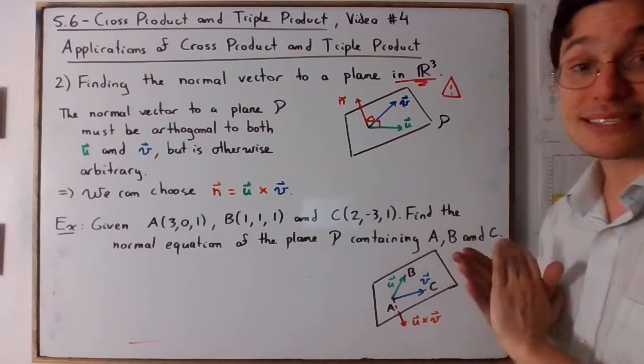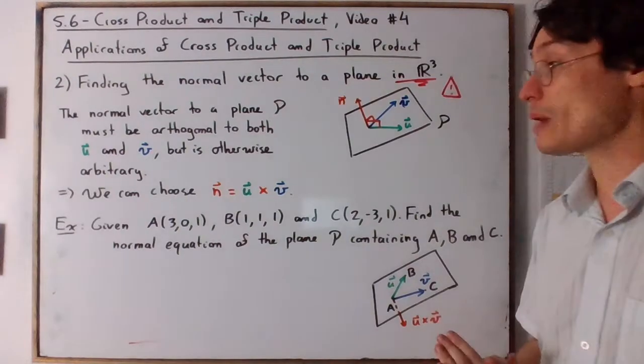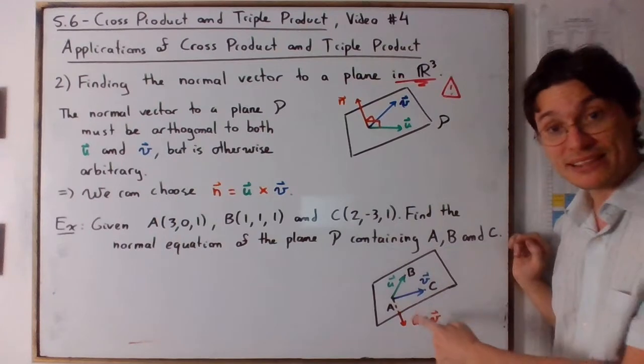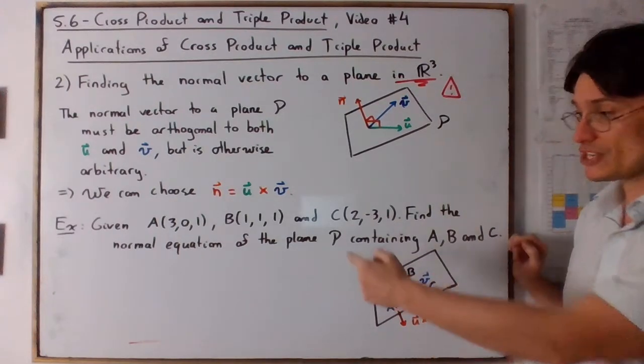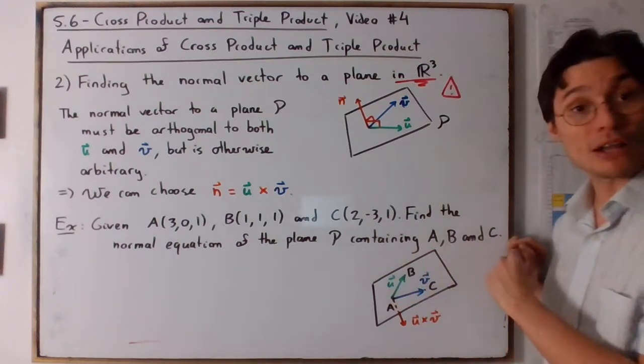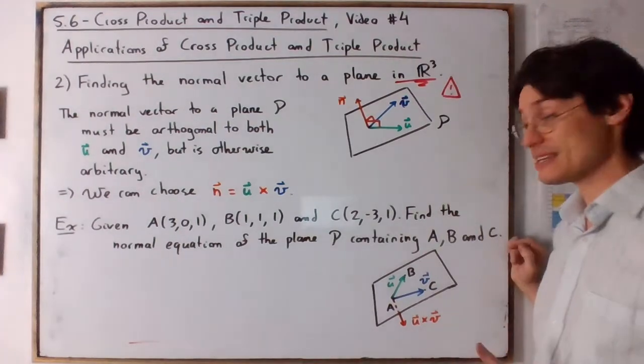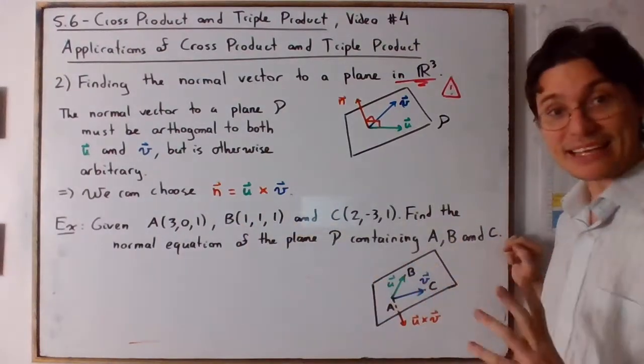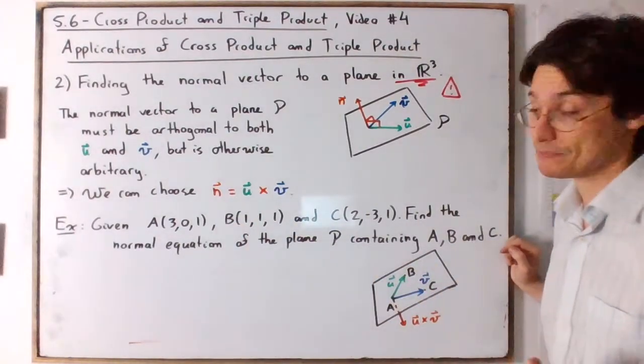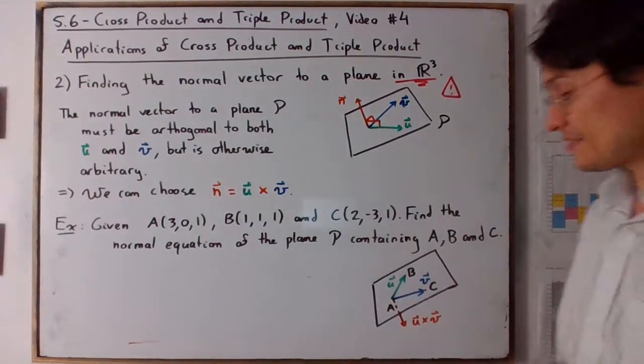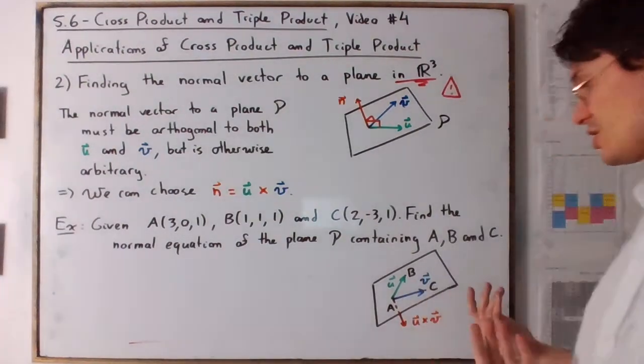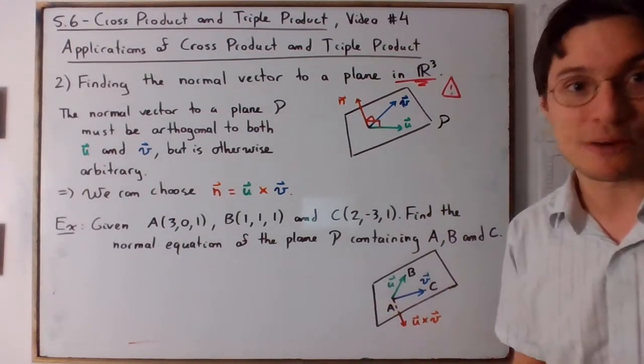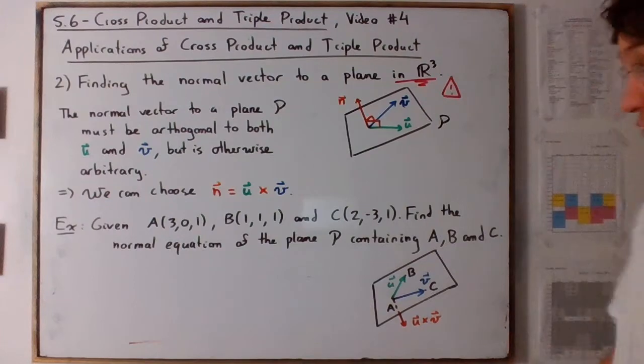So now let's put this into application. We are given three points, A, B, C, which I can represent here. And I want to find a normal equation of the plane that contains all of them, that contains A, B, and C. Take note that these are the same points that I gave in the last problem in video number three. That being said, we will redo all of the calculations just because I don't remember them on top of my head. So it's the same idea.